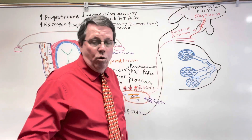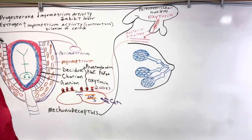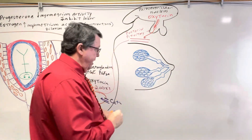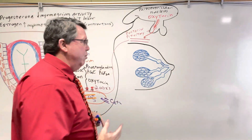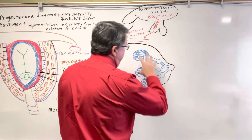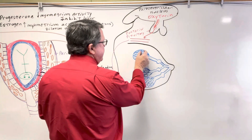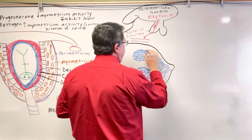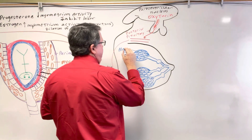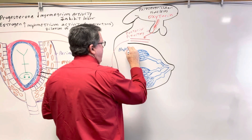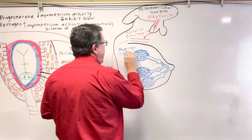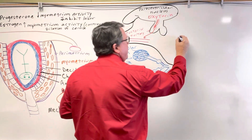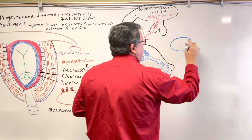Now let's look at what happens after the baby's born. Here's a breast — this is going to be the nipple, these are the lactiferous ducts, and these are the lobules, which are all mammary glands. About 15 to 20 lobules make up a lactiferous duct. The cells in the lobules are called alveolar cells, and they contain milk.